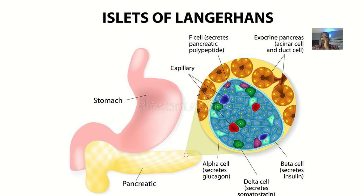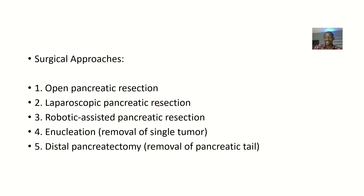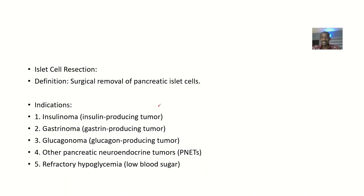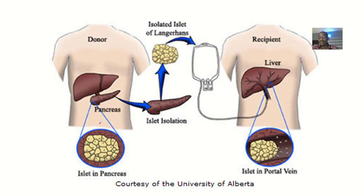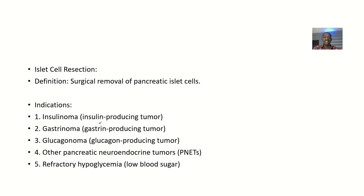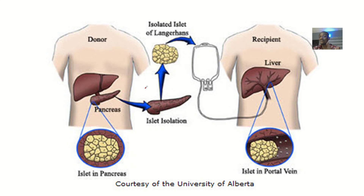I came across islet cell resection when I was reading about insulinoma, which is like a pancreatic tumor. This pancreatic tumor necessitated doing the surgery to remove the tumor, so you cut out some islets of Langerhans cells from the pancreas. So islet cell resection simply means the surgical removal of pancreatic islet cells — those are the islets of Langerhans.